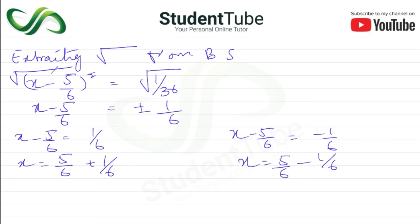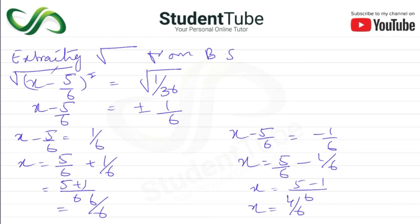So we get two values: x = 5/6 + 1/6 = 6/6 = 1, and x = 5/6 minus 1/6 = 4/6 = 2/3. Therefore the solution set is {1, 2/3}.